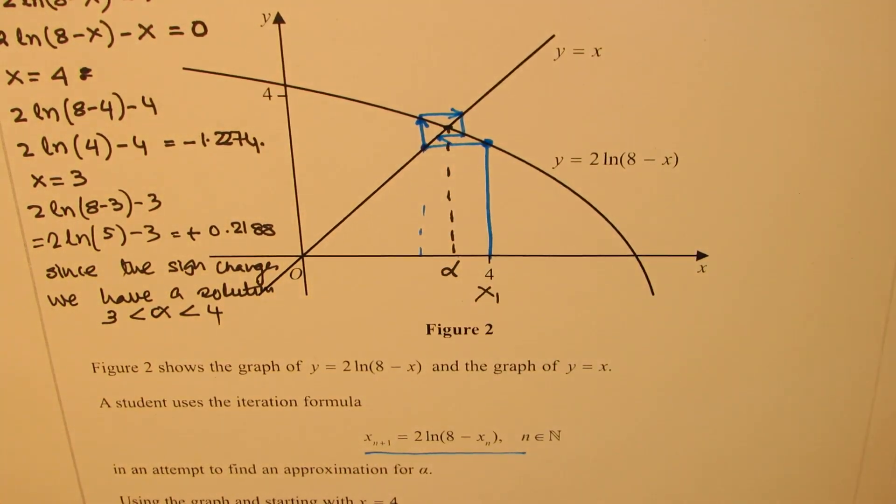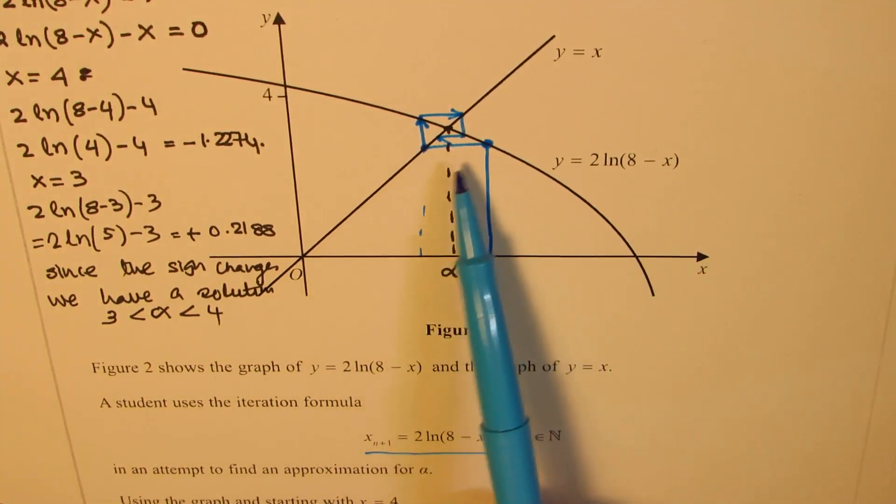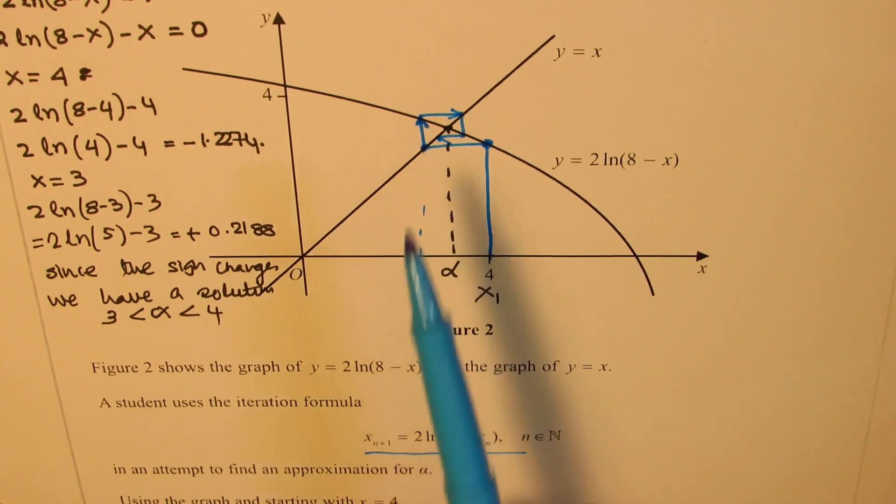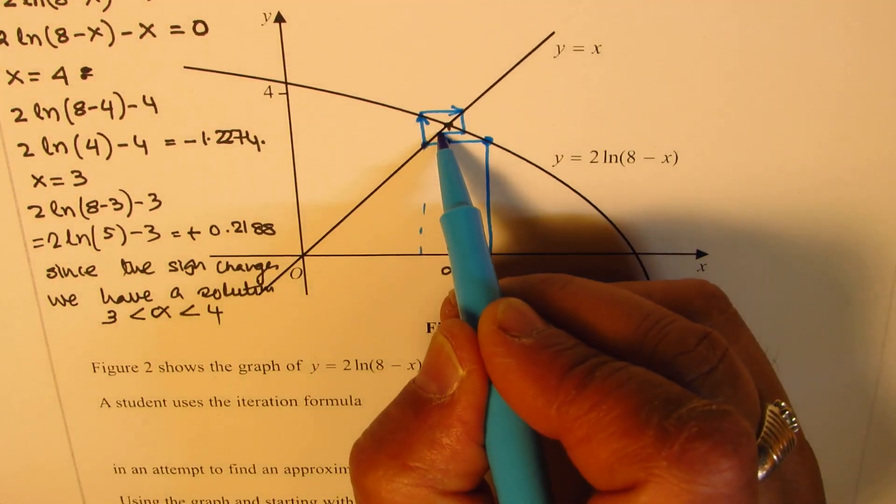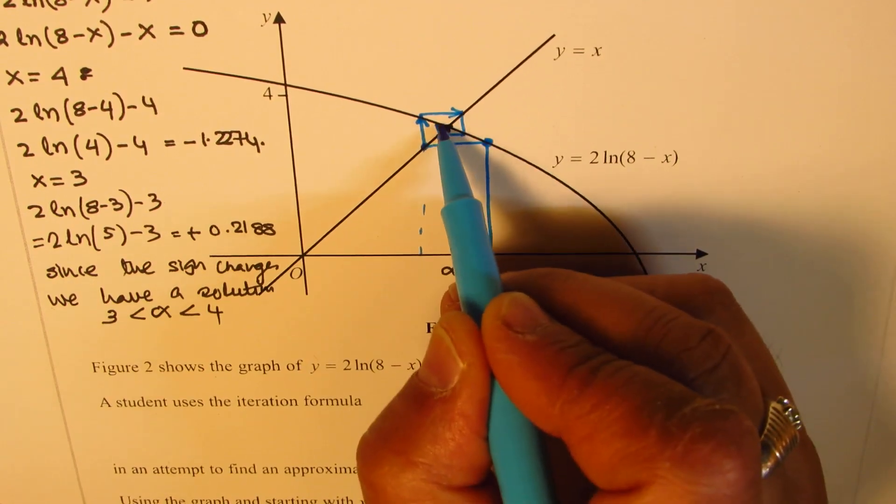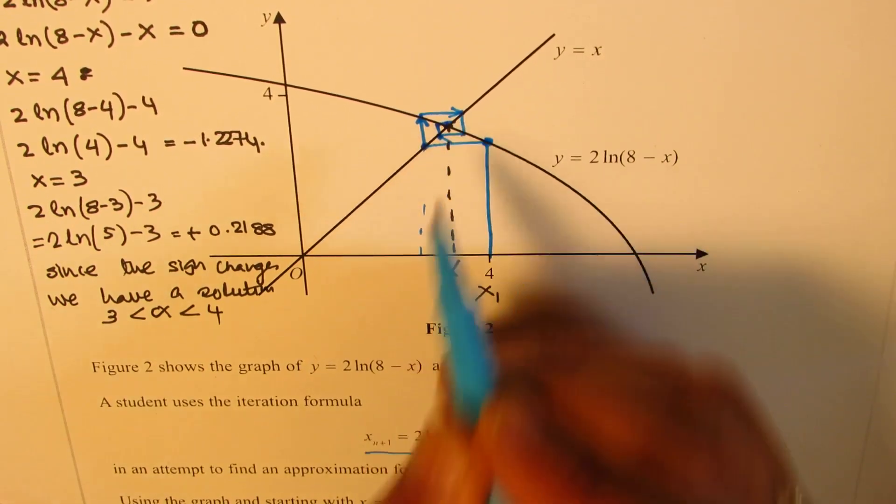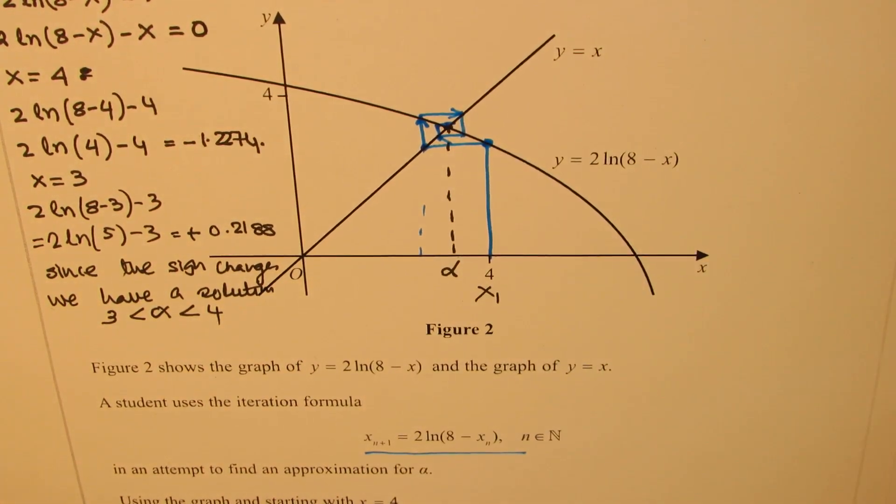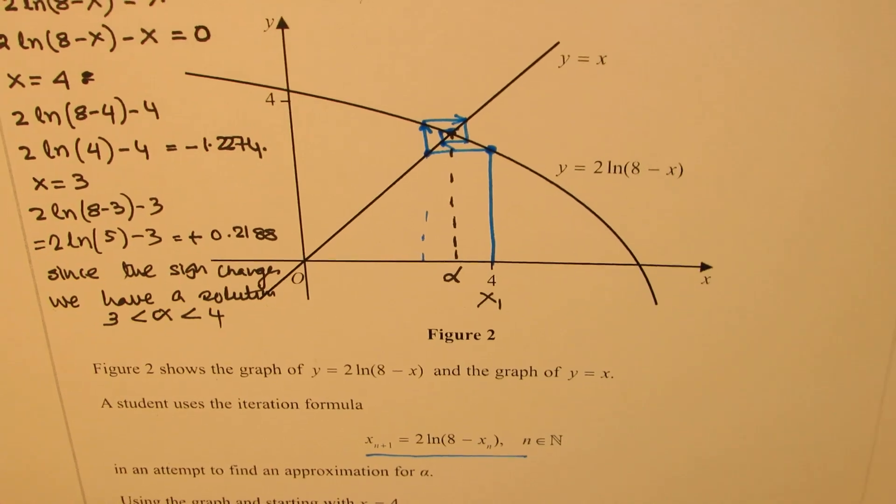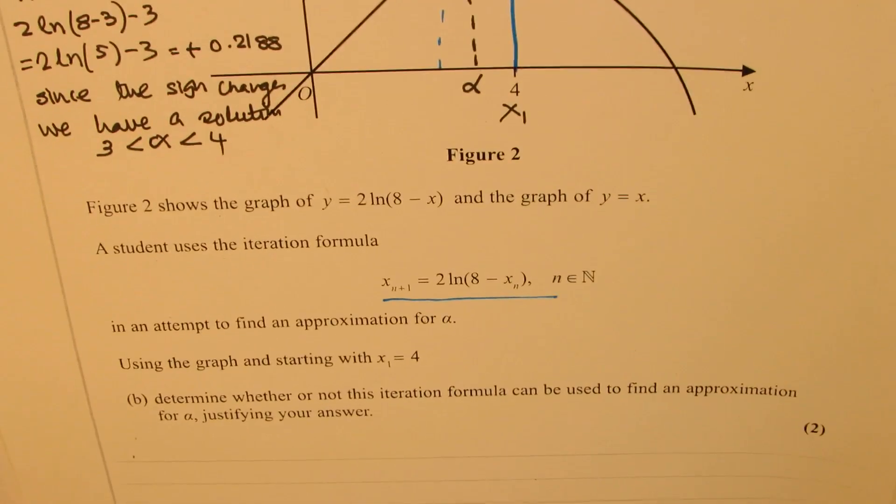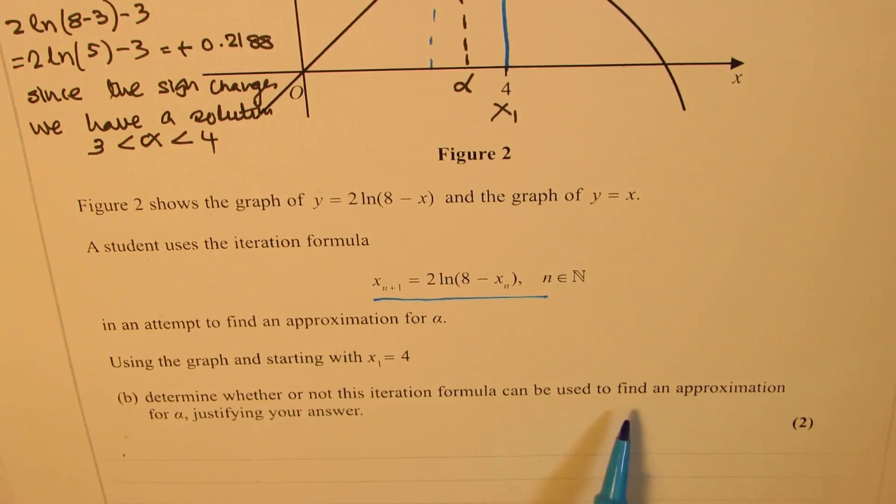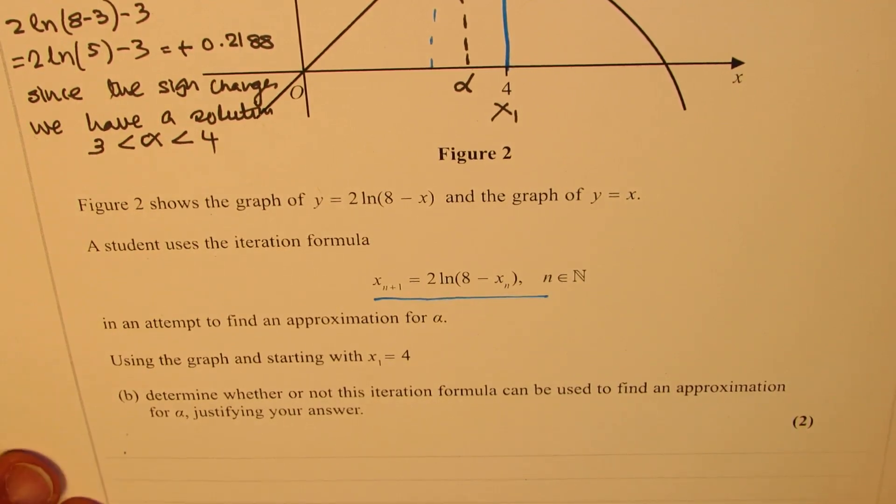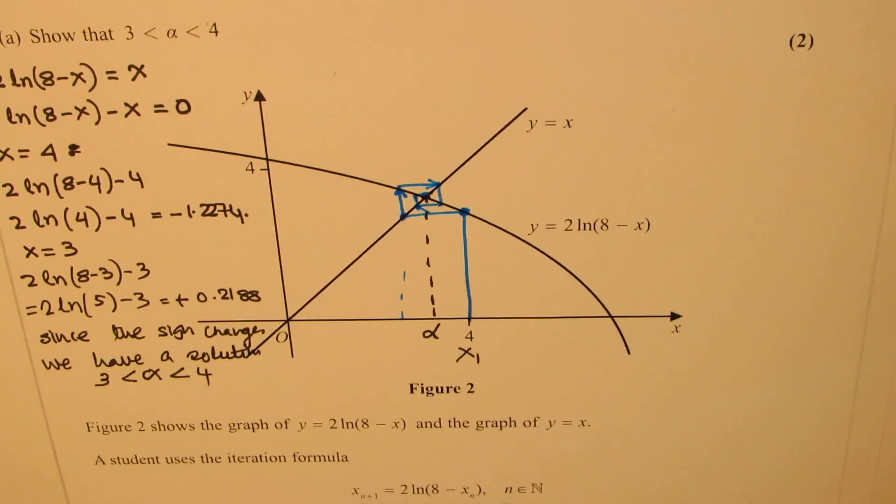That is the iterative process which you can see here. We actually get to the alpha value very, very close. So that is how we can explain that the iteration formula can be used to find an approximation for alpha. This is the justification for the same.